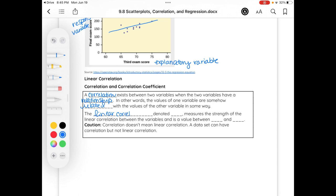The linear correlation coefficient, we denote as r, measures the strength of the linear correlation between variables and is a value between zero and one. Correlation doesn't mean linear correlation. A data can have a correlation, but not be linear, as we'll see on the next page.